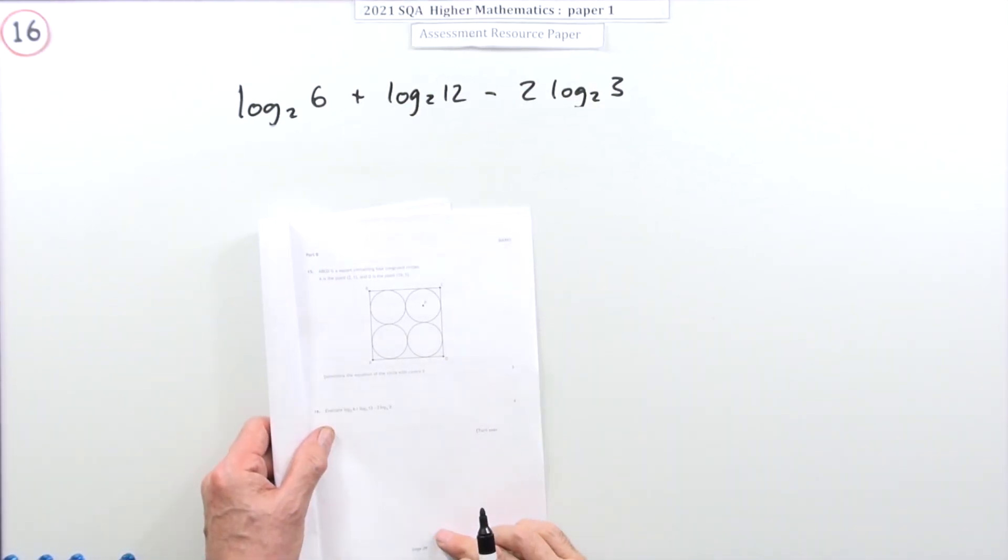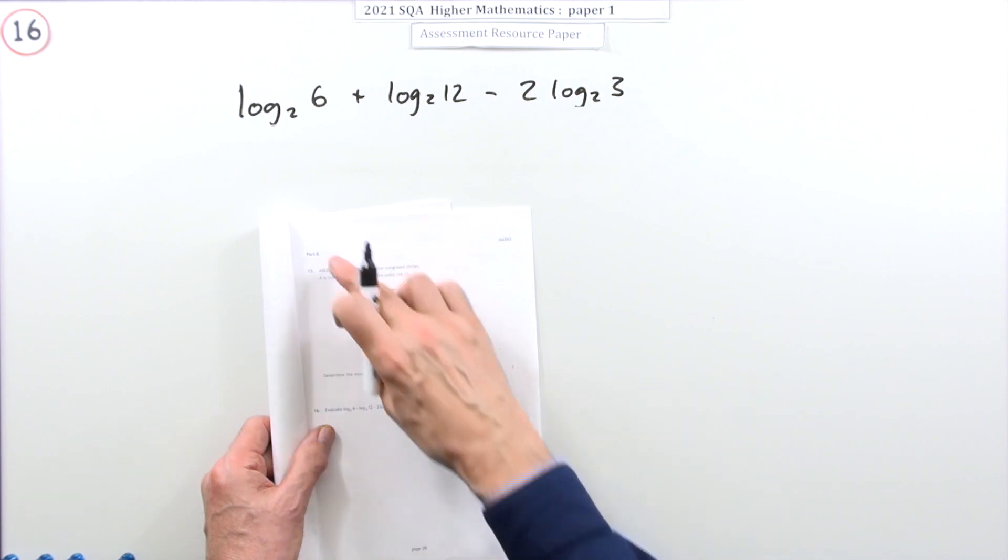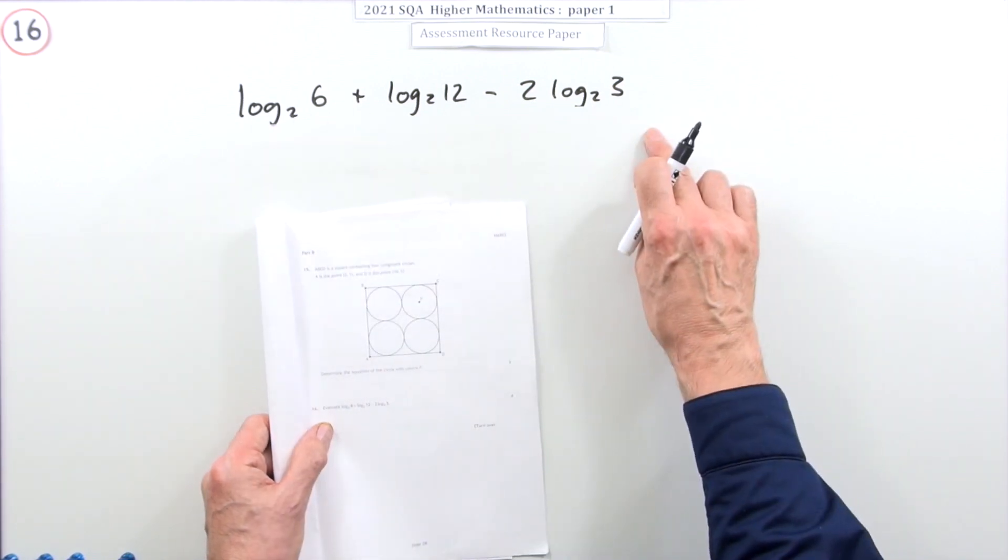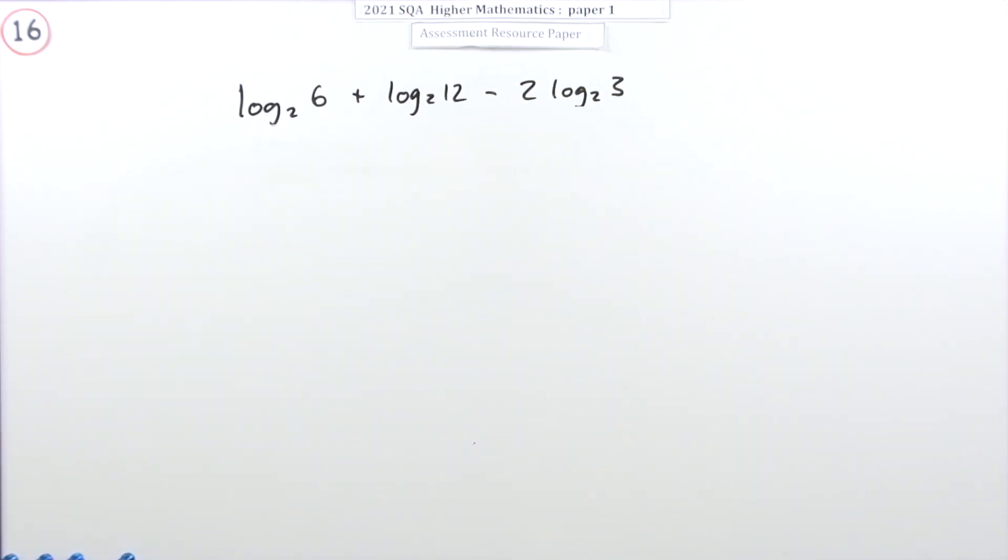Number 16 from paper 1 of the 2021 Higher Maths Resource Paper Part B, the one with circles and logs, and it's the logs for four marks. Simply evaluate this for four marks. So that's nice and easy.